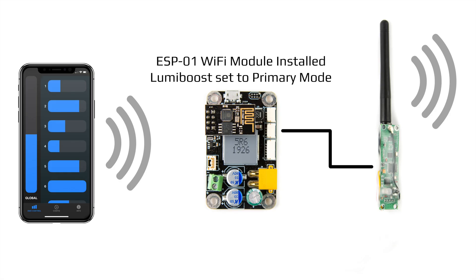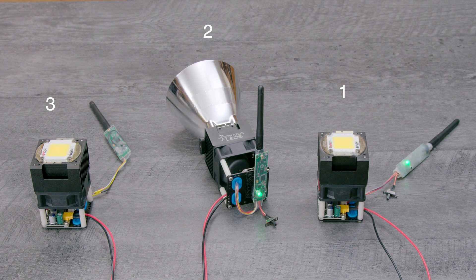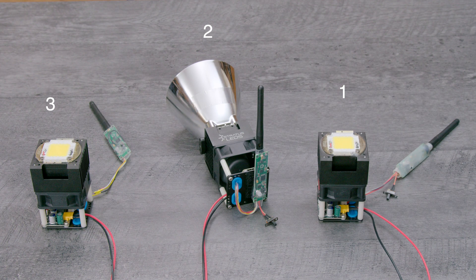So in this setup, the primary LumiBoost is receiving a signal from the smartphone and the wireless transceiver is broadcasting it to all the other transceivers. Each LumiBoost is assigned a unique DMX address. In this case, they are set to 1, 2, and 3. This allows for individual control of each module.